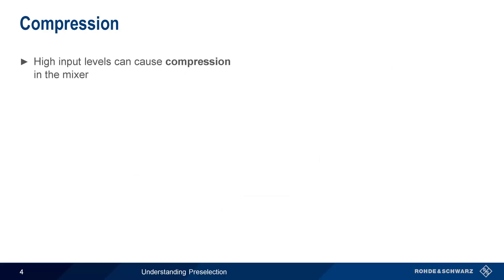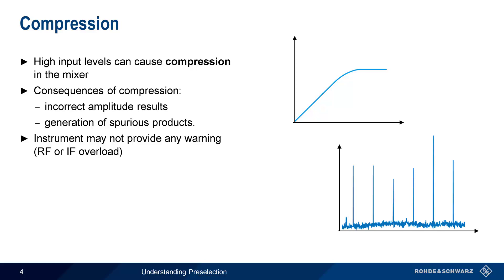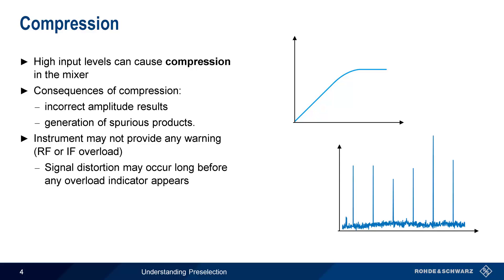Like all active devices, mixers are subject to compression at high input levels. Compression has several consequences, the most important being incorrect amplitude results and the generation of spurious products. Mixer compression is even more problematic because in many cases, the mixer may be in compression without any warning from the instrument, such as an IF or RF overload indication. The lack of an overload warning does not mean that we have no spurious products due to mixer compression. Signal distortion can, and often does, occur long before overload is indicated. It's especially important to remember that the signals causing mixer compression may be outside of our current measurement range or span. A high-powered signal can cause mixer compression even if we don't see that signal on our instrument display.